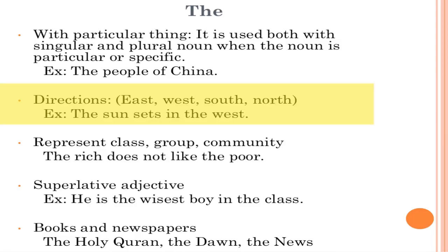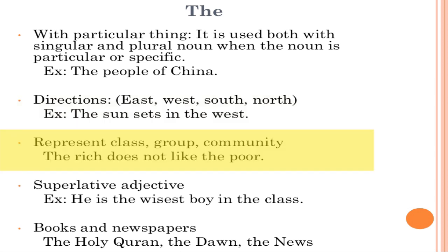Rule number one for 'the': directions. We use 'the' with directions — 'in the east', 'in the north', 'in the south', 'in the west'. For example, 'the sun rises in the east'. Rule number two: to represent a class, group, or community — 'the rich', 'the poor'. 'The rich' is a collective noun representing all rich people.